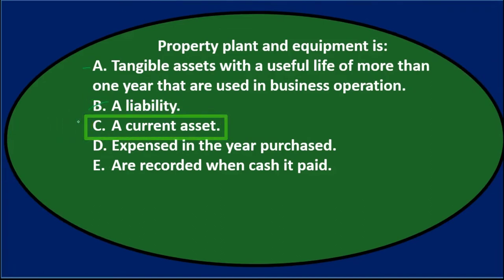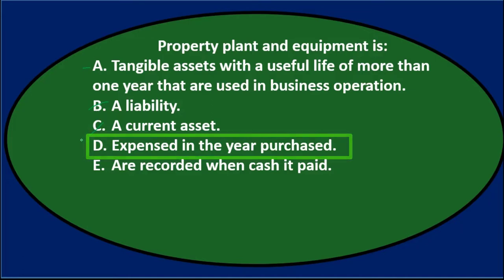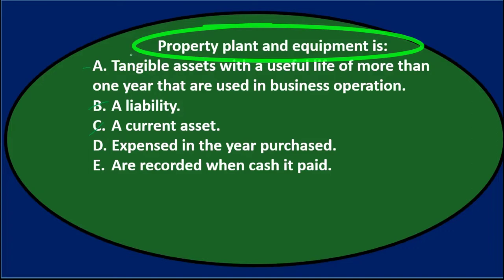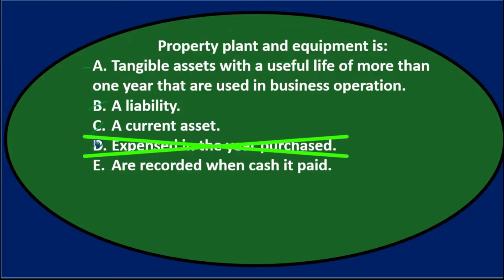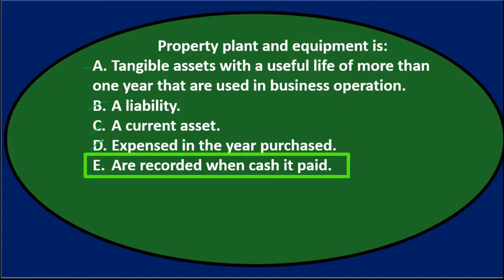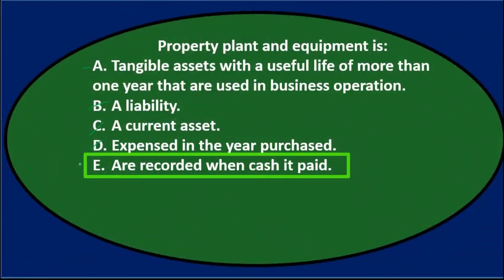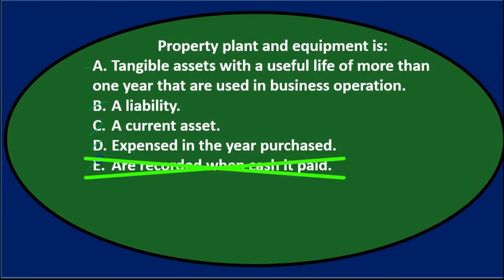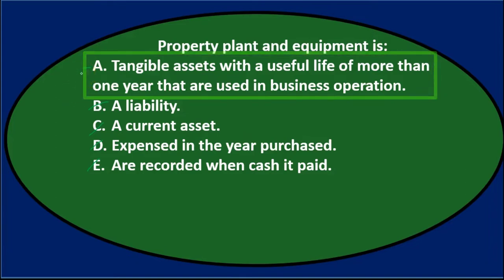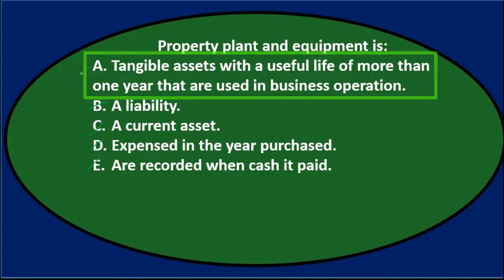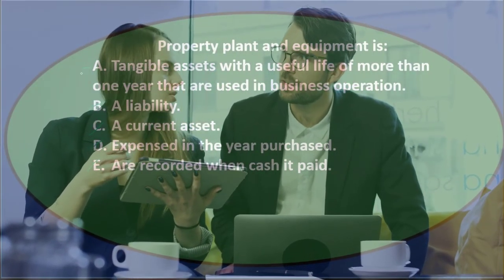C says a current asset. That's a bit closer because it is an asset, but it's not going to be a current asset — it's going to be a long-term asset. So it's not C. D says expensed in the year purchased, and it's not going to be expensed in the year purchased. With property, plant, and equipment, we capitalize it in the year of purchase and therefore do not expense it. E says recorded when cash is paid, and that's not necessarily the case because we may have purchased it on account or financed it in some way. So A looks like the correct answer. From a multiple-choice standpoint, a longer, more detailed answer that hedges itself might be one to consider, as the extra detail helps ensure it's right in all circumstances.